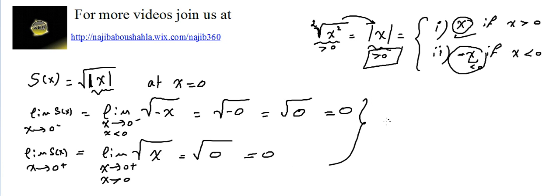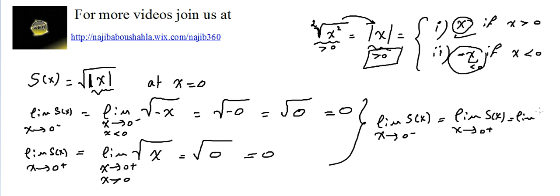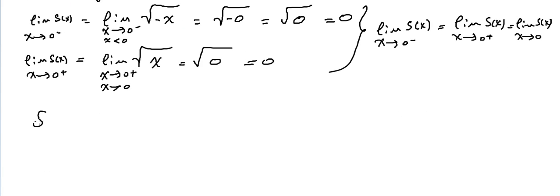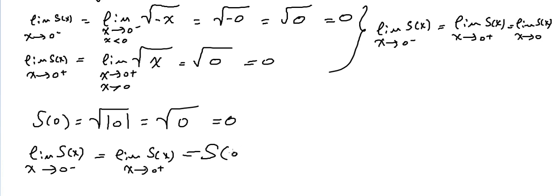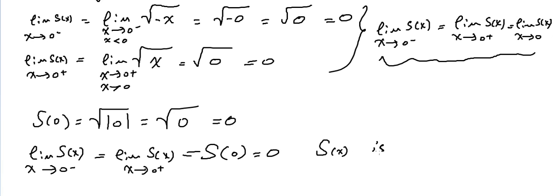This means the limit exists. The limit of f of x as x approaches 0 minus equals the limit of f of x as x approaches 0 plus, which equals the limit of f of x as x approaches 0. Now, we also check f of 0, which is radical absolute value of 0, equal to radical 0, also equal to 0. This means the limit exists and is equal to f of 0 — all of them equal 0. This means f of x, or f, is continuous at x equals 0. And that's it.